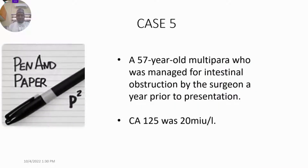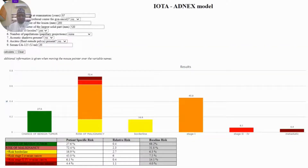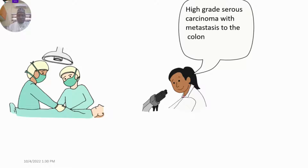Case 5 was a 57-year-old multipara who was managed for intestinal obstruction by a surgeon a year prior to presentation. Her CA-125 was 20. We inputted the information and the model showed a risk of benign lesion and risk of malignancy, with the highest risk being for stage 1 disease. She had surgery and histopathology confirmed it was high-grade serous carcinoma with metastasis in the colon.